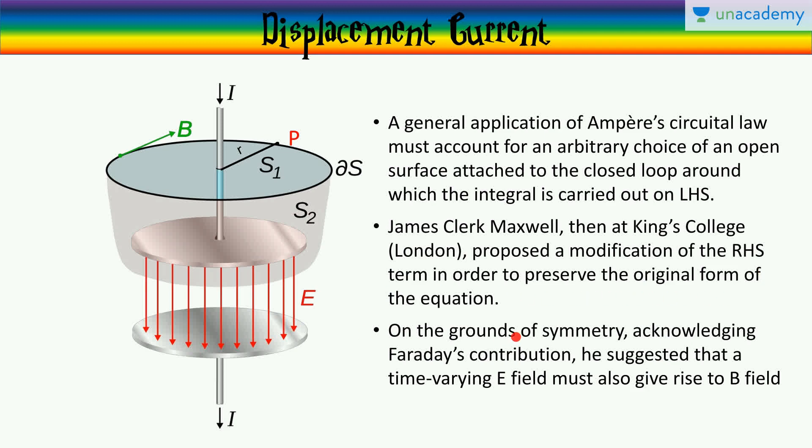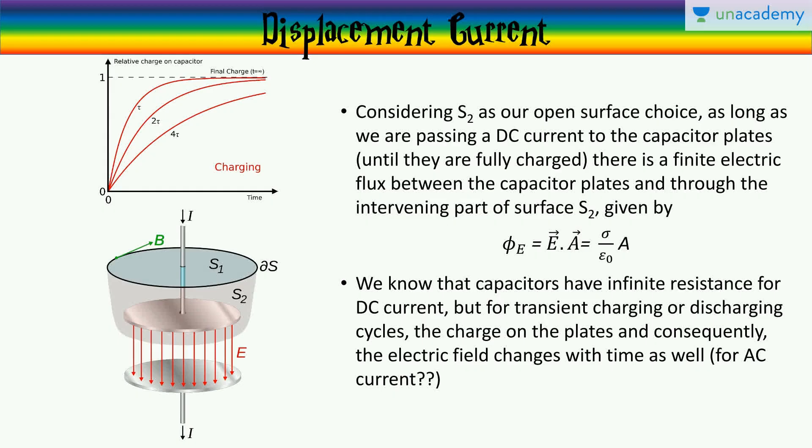He proposed a modification to the RHS term in order to preserve the original form of the equation. On the grounds of symmetry, acknowledging his friend Faraday's contribution, which said that a changing magnetic field induces an electric field, Maxwell suggested that a time-varying electric field must also give rise to a magnetic field. Does it? He proposed, and he also proved it.